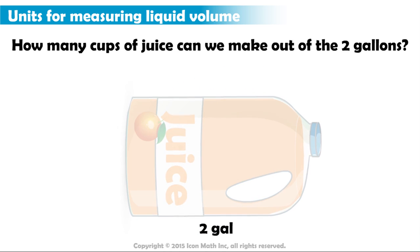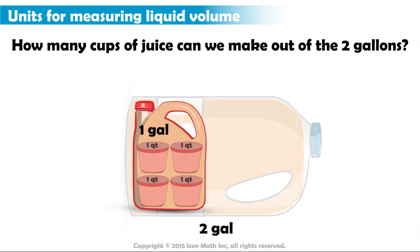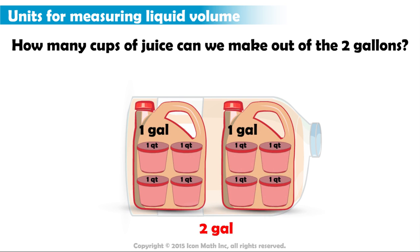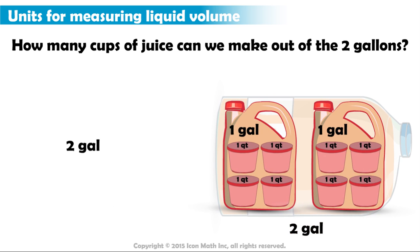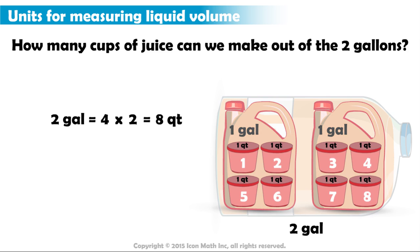Let's take a closer look at the gallon. We know that a gallon is equal to four quarts. And since we have two gallons, we have four times two, which is equal to eight quarts.